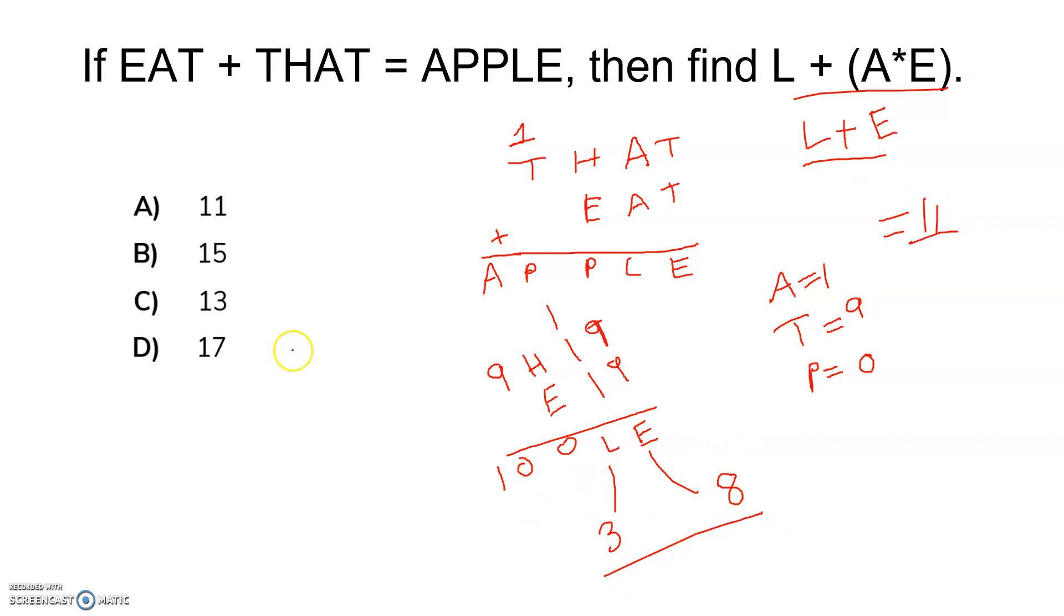So basically in this way we are getting the result as A, because we already calculated the values which are required to get L times A plus E. Simply looking at the expression itself, we are getting A value as one, P value as zero, and T value as nine because this is the basic concept from fundamental principles. And as soon as we are getting A and T, we can calculate L and E which are coming as three and eight. So the answer is 11.